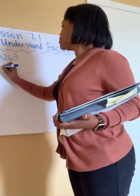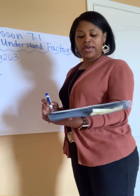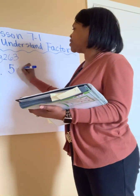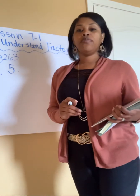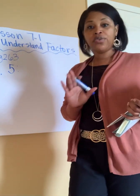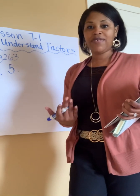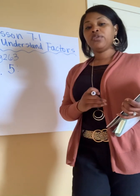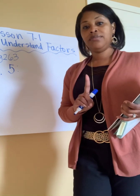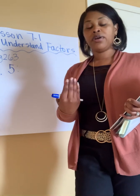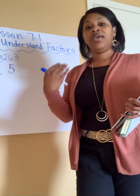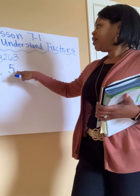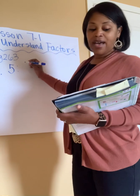Number 9, page 263 number 9. They want to know the factor pairs of 5. So the question is, what two numbers can I multiply together to give me 5? So you have to know your 5 facts. The rule of thumb is to just start with 1, because every number can be multiplied by 1 and that number to give you itself. So 1 times 5 is 5.